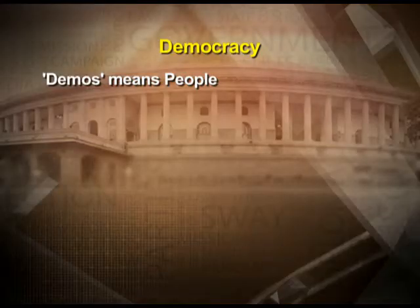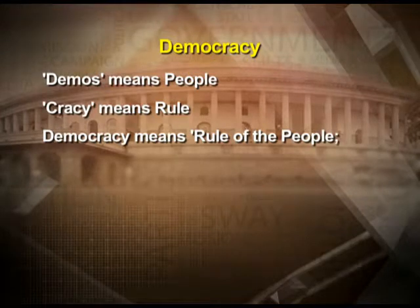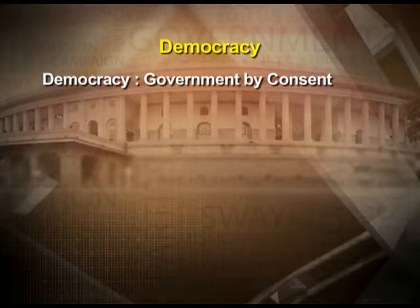Democracy — if you divide the word further, it is a combination of two words. One is 'demos' meaning people, the other is 'krasi' meaning rule. So democracy means rule of the people. In other words, the government that is formed, the government that is instituted among people, is run according to the consent of the people, the consent of the governed. So the main ingredient of democracy is the idea of government by consent.